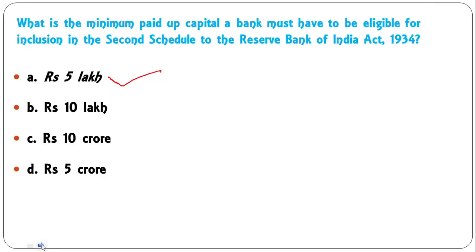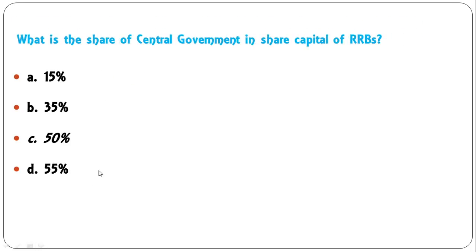What is the share of the central government in the share capital of RRBs (Regional Rural Banks) — 15%, 35%, 50%, or 55%? The correct answer is 50% for the central government.